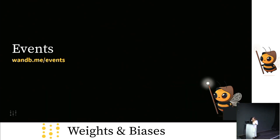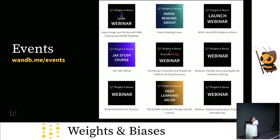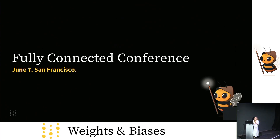We love throwing events, as you can probably tell, and we run about four to eight events a week. A lot of these events are virtual, so you guys can all join them. You can find them at oneb.me/events. We're super excited to announce that we are hosting our first-ever user conference in San Francisco in person on June 7th. We don't have a sign-up page just yet, but if you watch our social media, we're going to post the link soon.